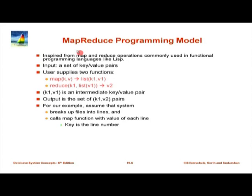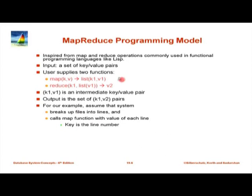MapReduce was inspired from the map and reduce operations initially proposed for languages like Lisp. When they were originally proposed, parallelism was not really the goal. The goal was to be able to declaratively specify certain operations on lists: map applies a function to each element of a list, and reduce combines values across many elements of a list. Soon people realized that this paradigm was very nice for parallel processing, and indeed it was used in that era for parallel processing. The Google people realized this was a good paradigm for their work too. In this paradigm, the user has to provide two functions — map and reduce — as well as configuration information like where the input is and where the output goes.